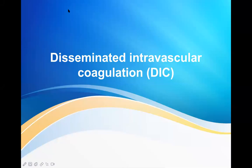Disseminated intravascular coagulation — this is a new topic, but not a new term for any medical student. This is a very serious condition which can be considered a secondary condition caused by many primary disorders or diseases. This is not a primary diagnosis; it is a secondary diagnosis, meaning some cause has to be present.